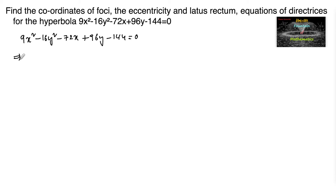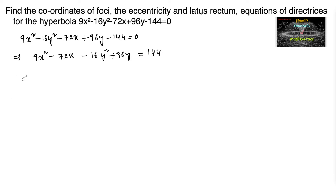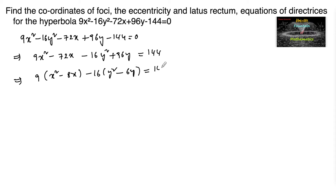This can also be written as 9x² - 72x - 16y² + 96y = 144. Taking 9 as common: 9(x² - 8x) minus 16 taken common: 16(y² - 6y) = 144.